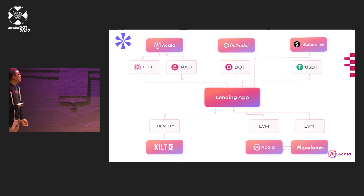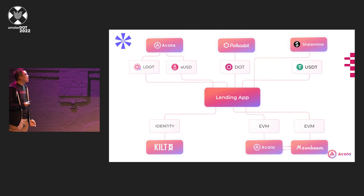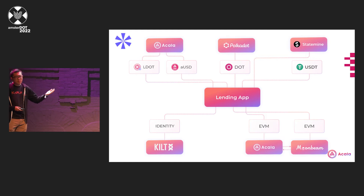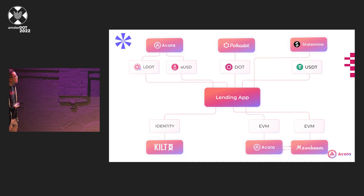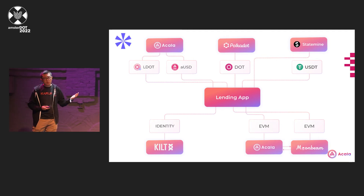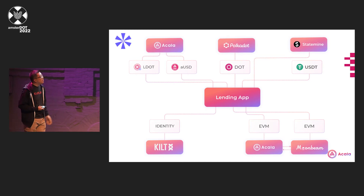Say we have a lending application in the middle. It can use assets like AUSD, LDOT — liquid-staked DOT from Acala. You can use DOT from Polkadot. They can use USDT from Statemint. They are all just assets. The user of the application might have 50 USDT, 50 DOTs, 50 AUSD sitting on different blockchains — but it's their money. Why do they need to know which blockchain their money is sitting on? They should just see their balance. The lending app could be deployed on Acala or some other EVM platform. Applications can be deployed on different chains, and because we can communicate with each other, there's a lot of things that can be done.